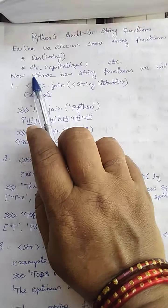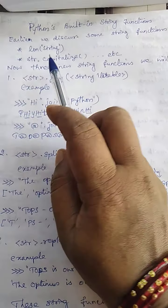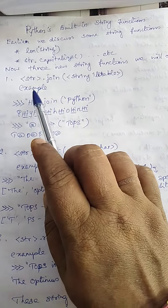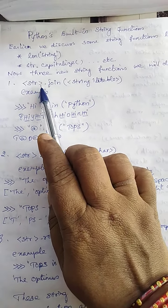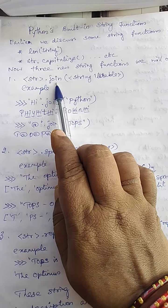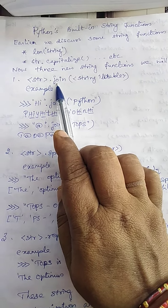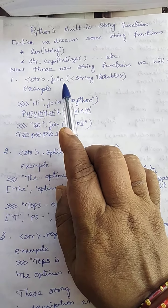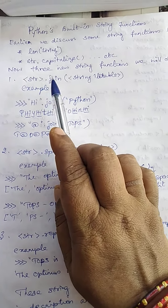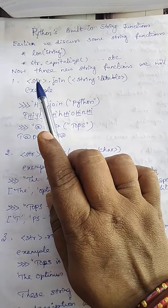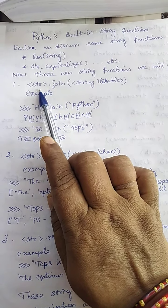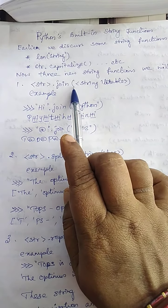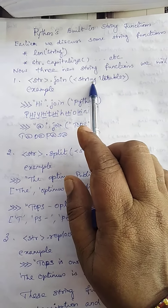Now we are going to see some new functions. The first one is string dot join. Join is a function that attaches one string to the other string given in the brackets.